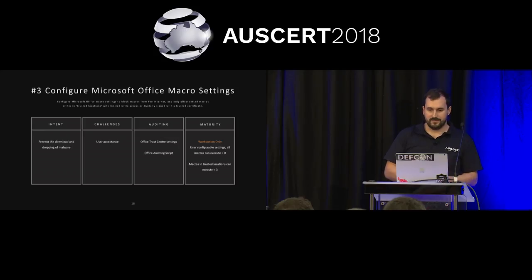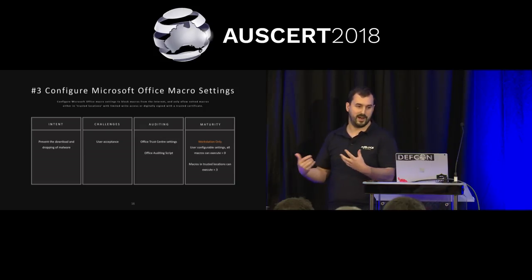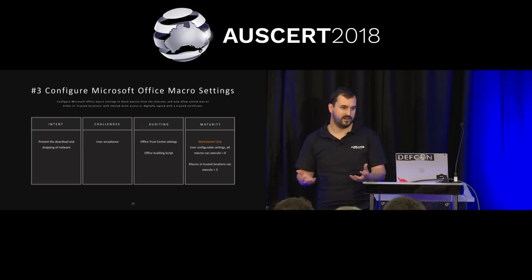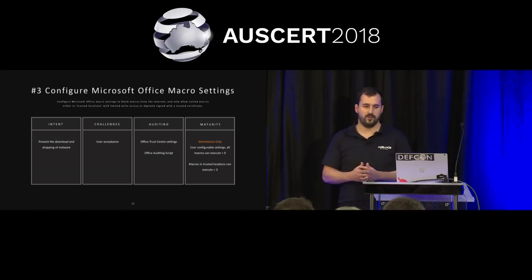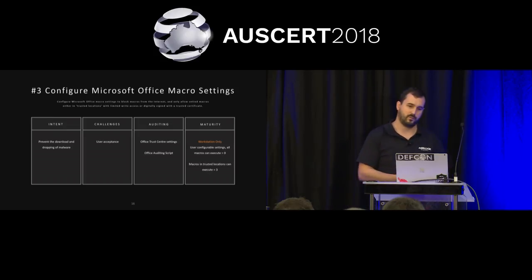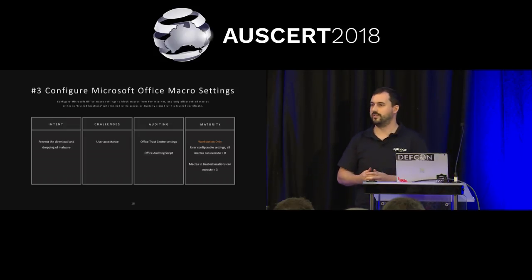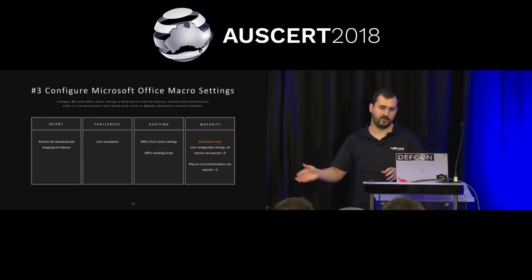As an auditor, you need to look at the Office Trust Centre settings inside the Microsoft Office applications to determine what the macro settings are. I've written an Office hardening auditing script that's available on my GitHub — the link will be at the end of this presentation. You can run it and it will tell you what the macro settings and postures are for all the different Office applications inside your environment.